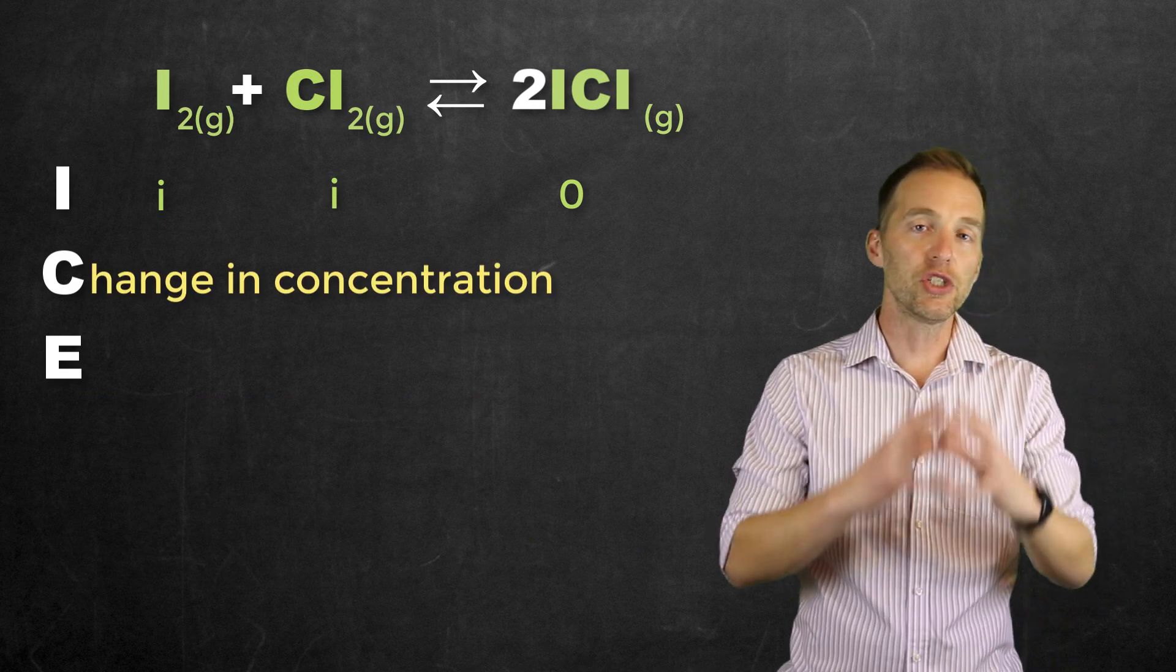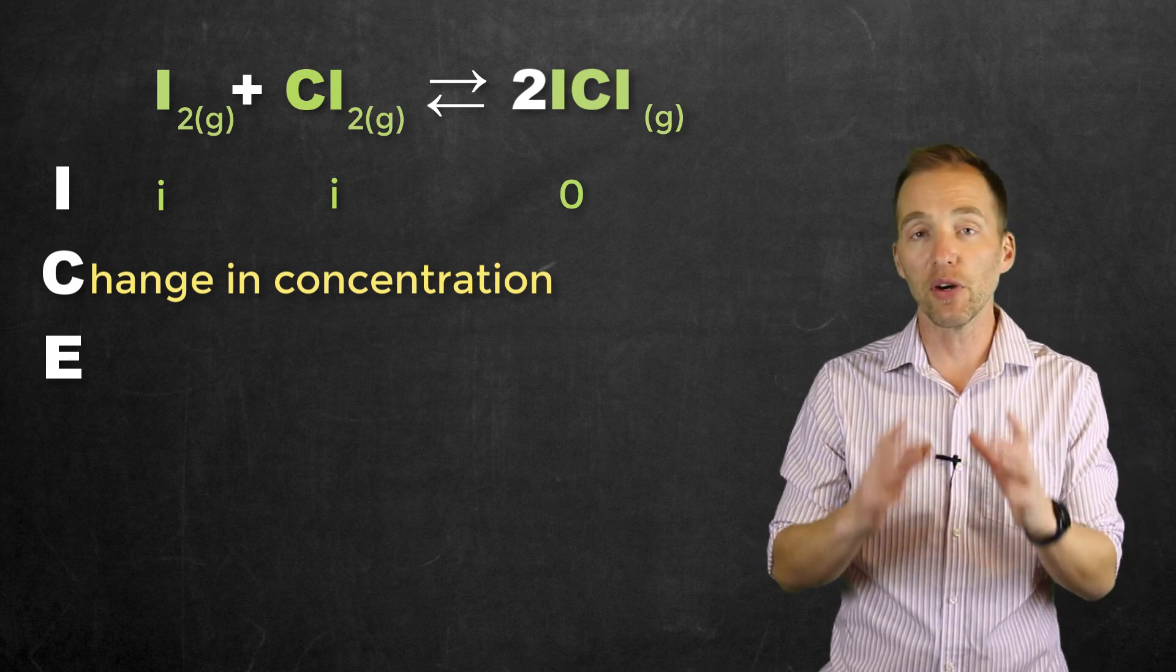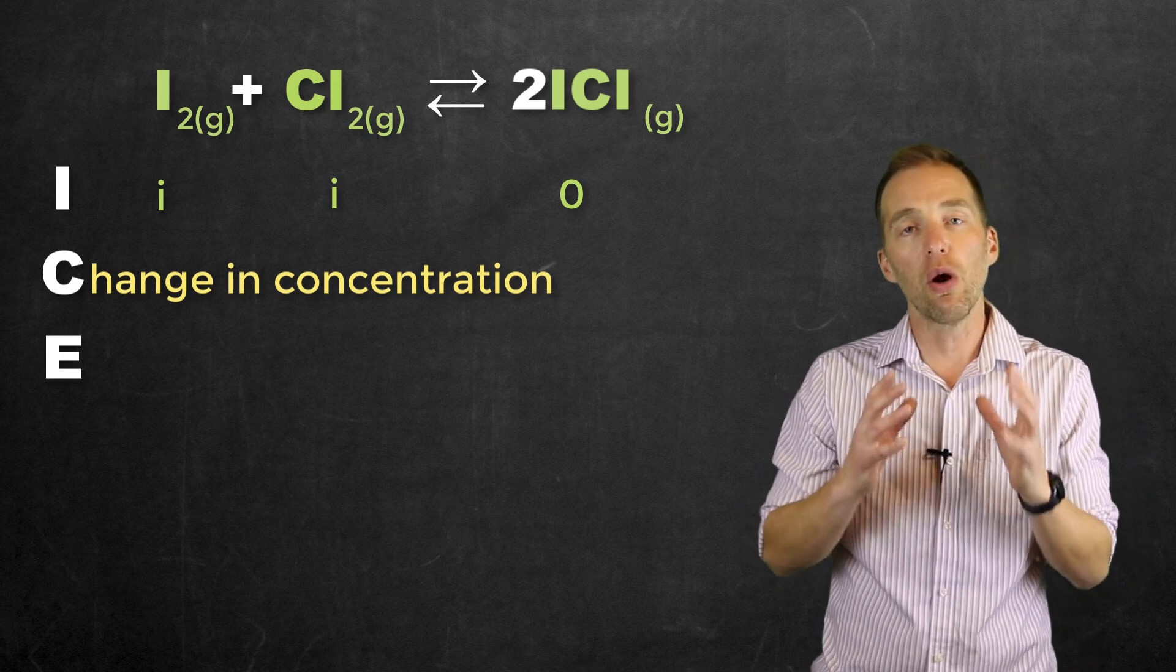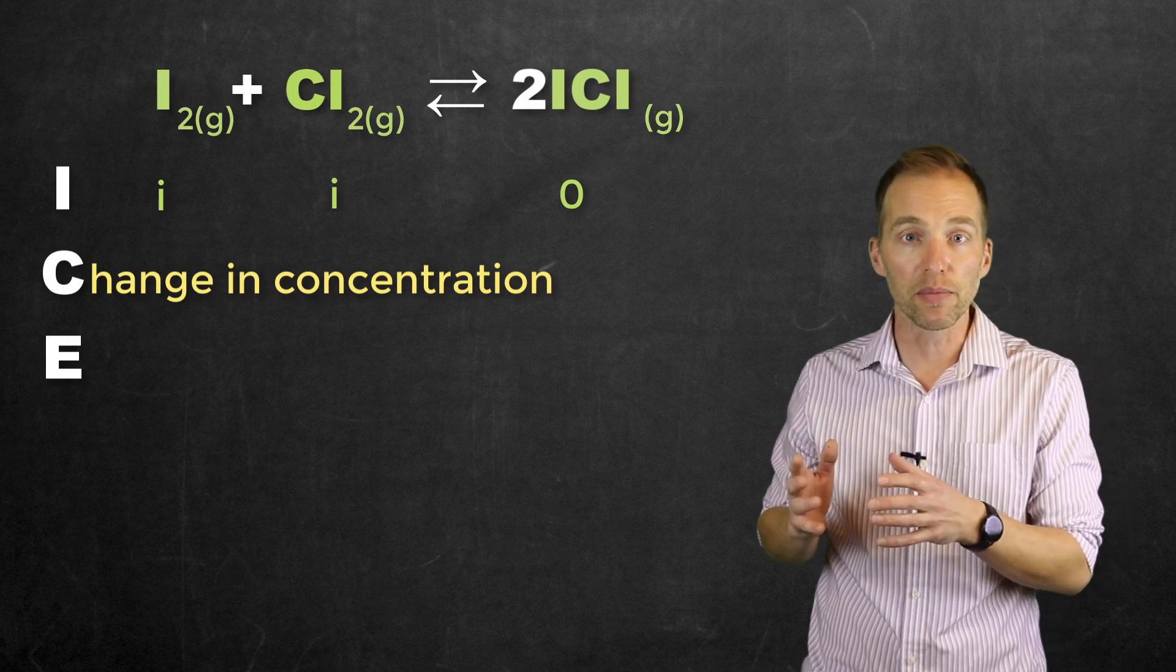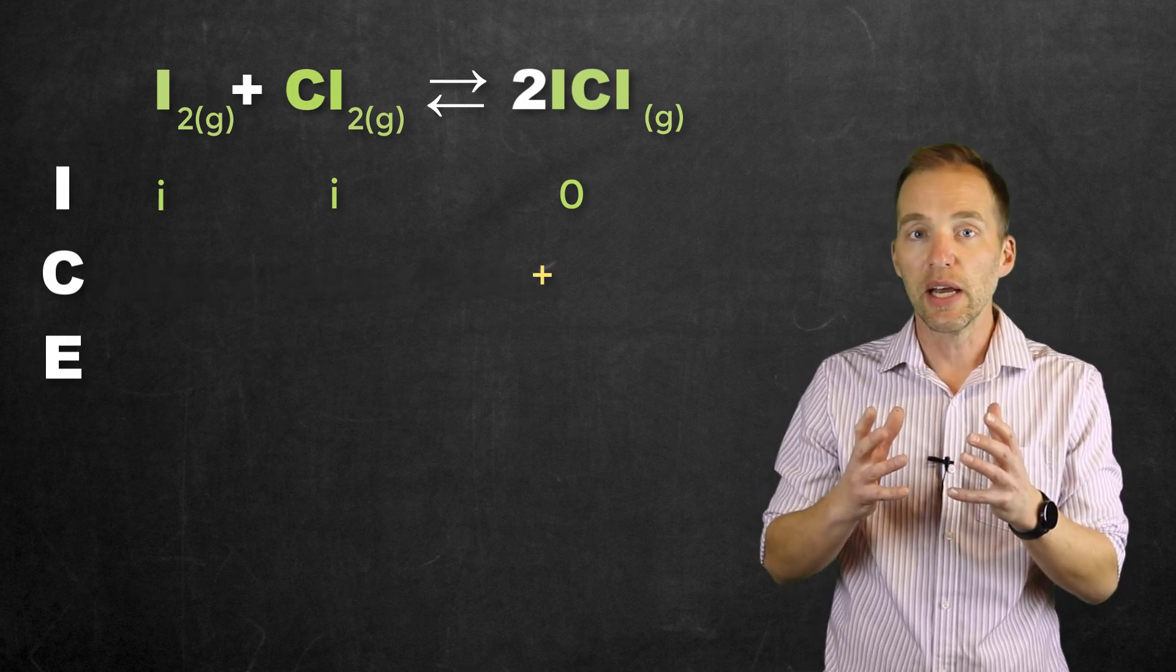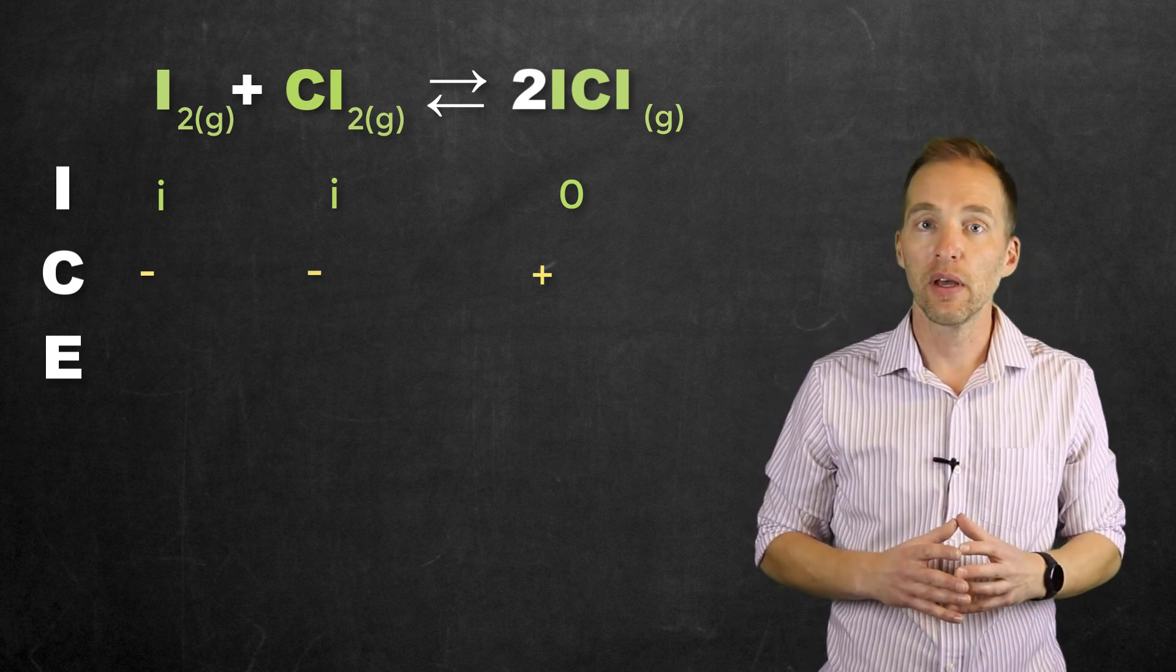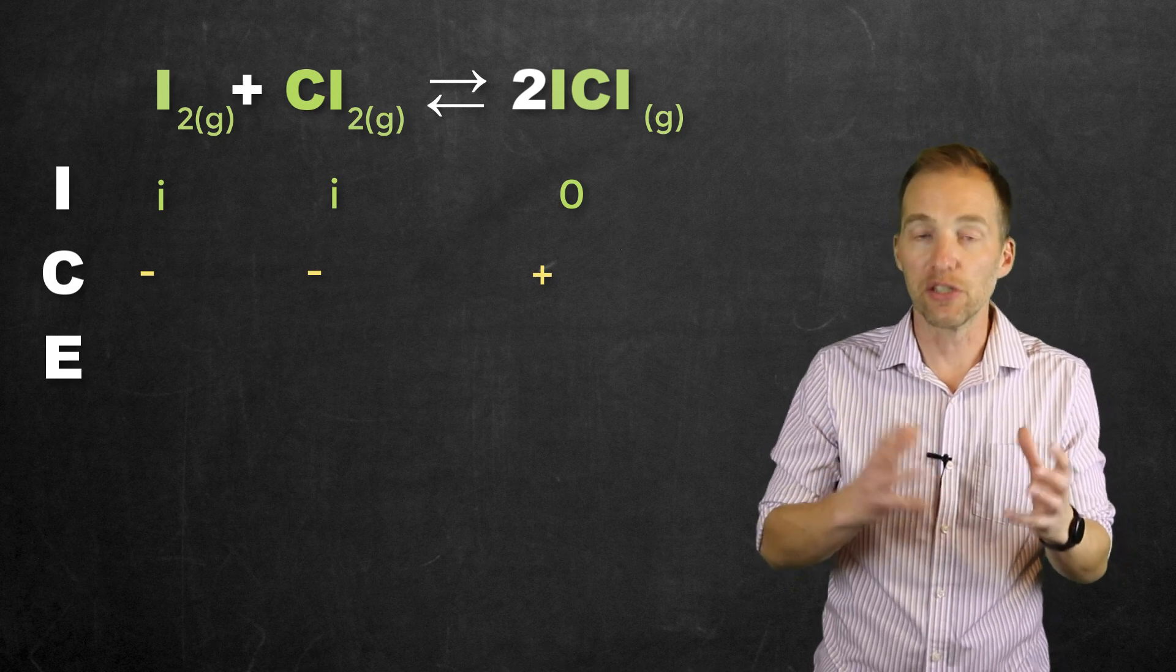The change in concentration is where the challenge comes in, because we have to understand that first, this is a closed system. So the only way that products get formed, that is the only way that their concentration is going to increase, is if the reactants react. So their concentrations are going to decrease. The magnitude of this change, we insert a variable X to represent.